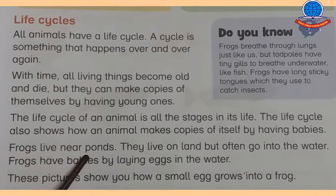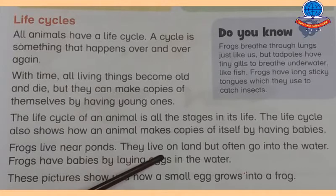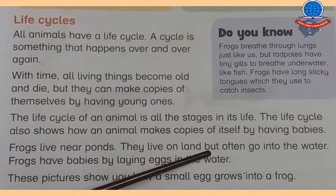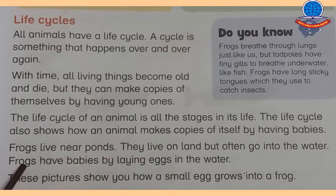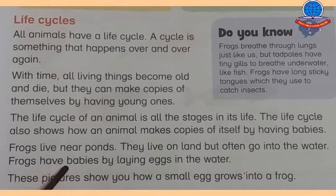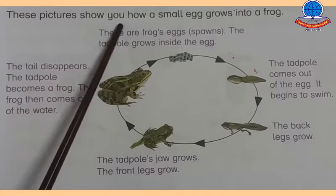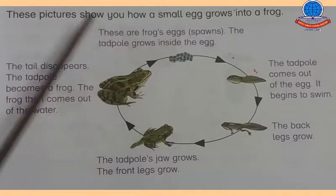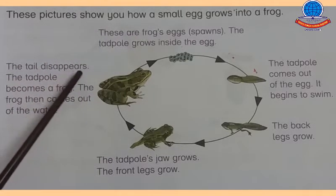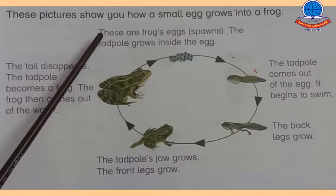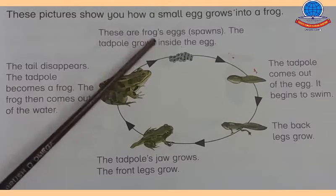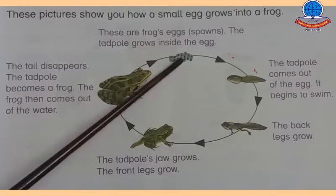Frogs live near ponds. They live on land but often go into the water. Frogs have babies by laying eggs in the water. Mendak talaab ke kareeb rehte hain — woh zameen par bhi rehte hain lekin aksar pani mein chale jaate hain. Mendak ke bachhe hote hain ando ke zariye. These pictures show you how a small egg grows into a frog. Ye picture aapko batati hai ki kis tarah ek ande se ek mendak banta hai.